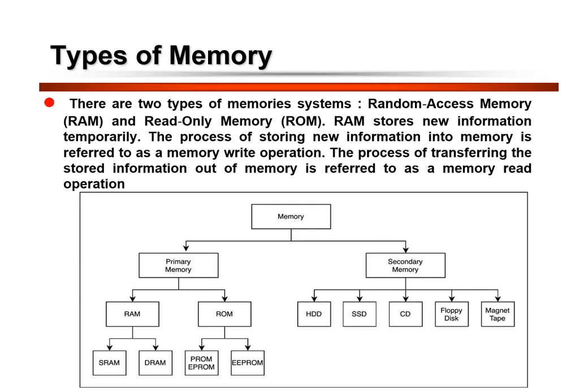Primary memory is classified as RAM and ROM. RAM is further classified into static random access memory (SRAM) and dynamic random access memory (DRAM). ROM is subdivided into programmable read-only memory (PROM) and electrically erasable programmable read-only memory (EEPROM). Secondary memory includes SSD, hard disk, compact disk, floppy disk, and magnetic tape.